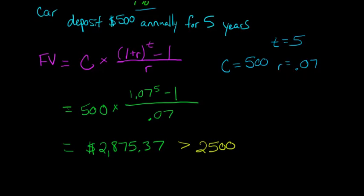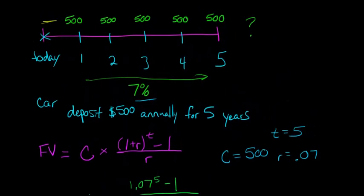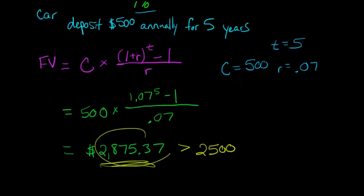So ultimately, what this $2,875.37 is representing is, if you were to deposit $500 at the end of each period for 5 years at a 7% rate of return, at the end of year 5, you would have $2,875.37 in the bank.